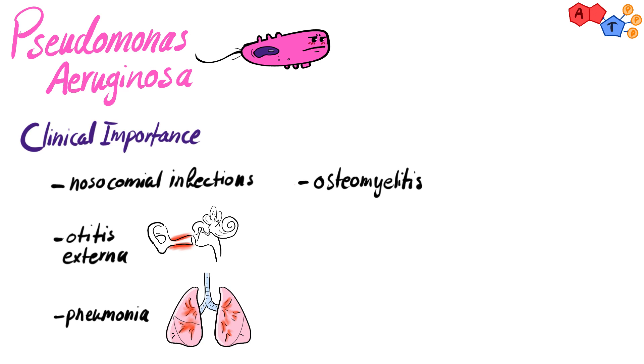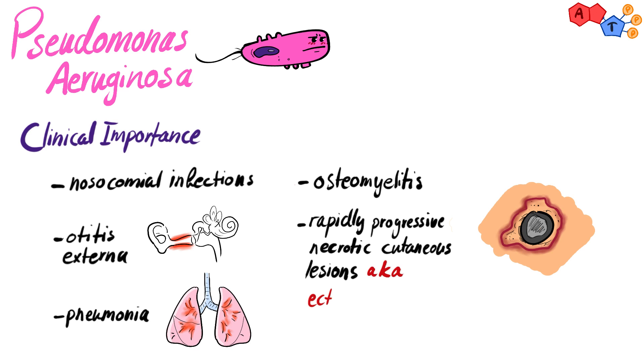Osteomyelitis, or inflammation of the bones, and many other infections. The point here is that he affects many parts of the body, and can even cause something called rapidly progressive necrotic cutaneous lesions, known as ecthyma gangrenosum, which is typically only really seen in immunocompromised individuals.